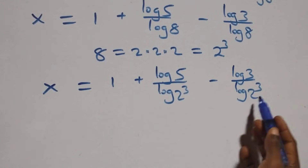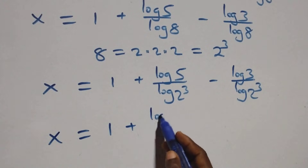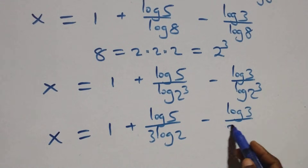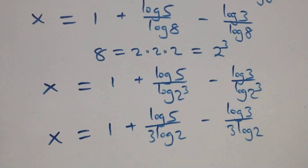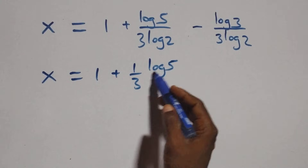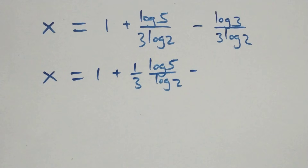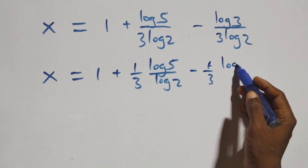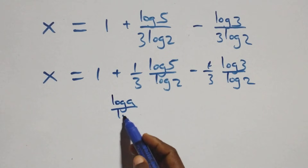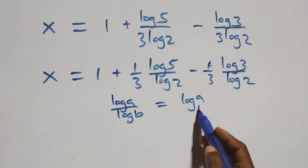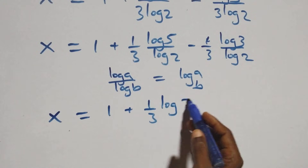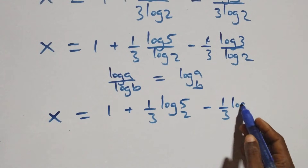We can rewrite this as x equals 1 plus (1/3)·(log(5)/log(2)) minus (1/3)·(log(3)/log(2)). Applying the change of base formula, where log(a)/log(b) equals log base b of a, we have x equals 1 plus (1/3)·log₂(5) minus (1/3)·log₂(3).